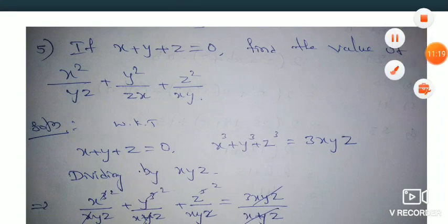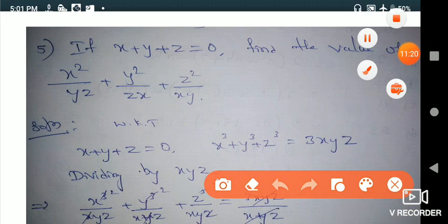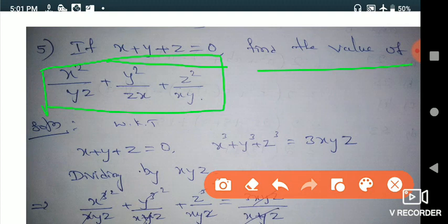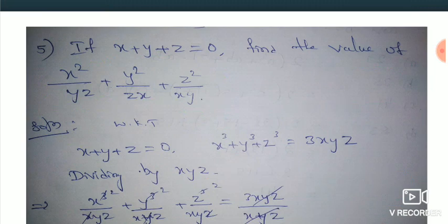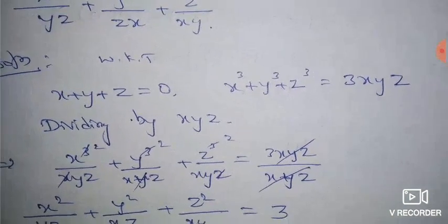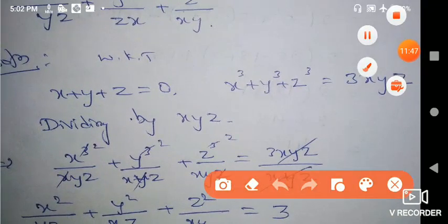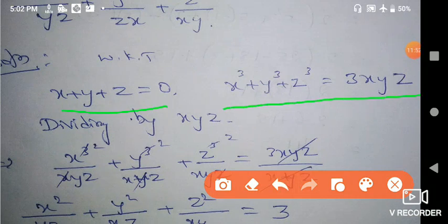Next question: if x + y + z is equal to 0, find the value of (x² + yz)/(yz) + (y² + zx)/(zx) + (z² + xy)/(xy). You need to find this value. If you already know the condition: when x + y + z = 0, then x³ + y³ + z³ = 3xyz.